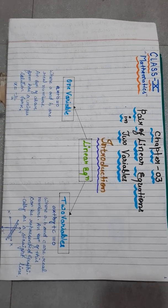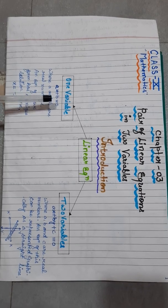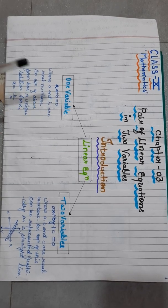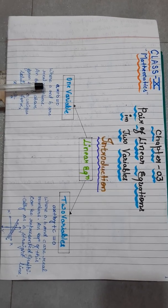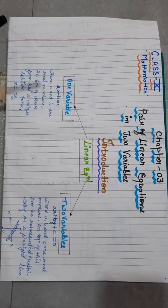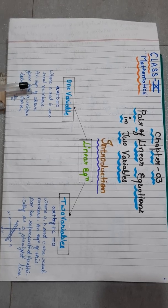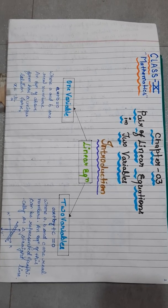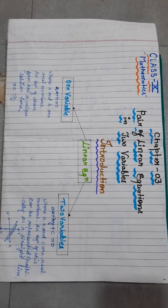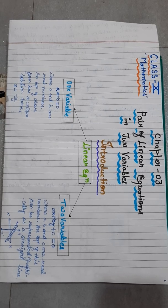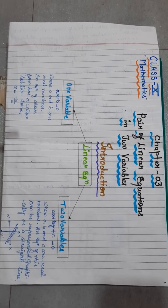In one variable, we have ax plus b is equal to 0, where a and b are real numbers. An equation of this form has a unique solution: x is equal to minus b upon a.